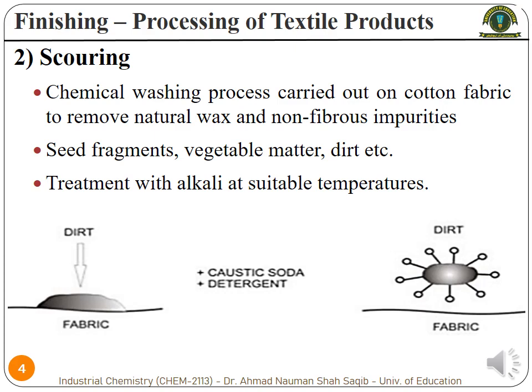The second step after desizing is the scouring process. It is a process in which chemical washing is carried out on cotton fabrics to remove any natural wax or non-fibrous impurities, which can be the remains of seed fragments or other vegetable matter from the cotton. There can also be some environmental contaminants present on the fabric, for example dirt or soil material. In this process, all the contaminants, dirt, and similar things are removed.